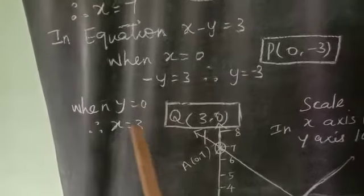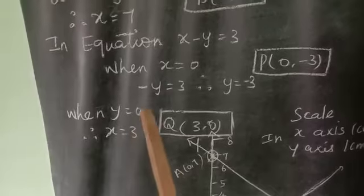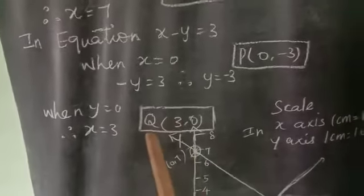When y is equal to 0, then we get x is equal to 3. The point 3,0 is a Q point.